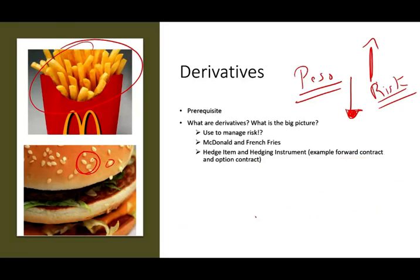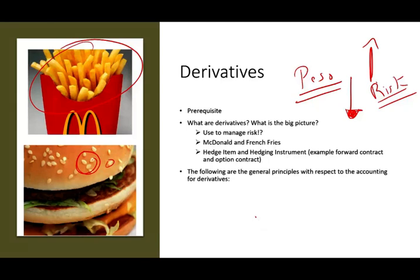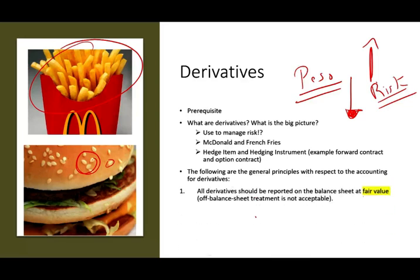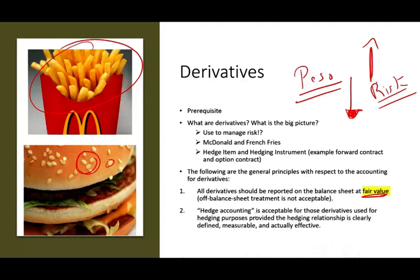Now let's get down to accounting. All derivatives should be reported on the balance sheet at fair value — if the value goes up, you write it up; if it goes down, you write it down. There is no off-balance-sheet treatment. Hedge accounting is acceptable for derivatives used for hedging purposes, provided the hedging relationship is clearly defined, measurable, and actually effective.